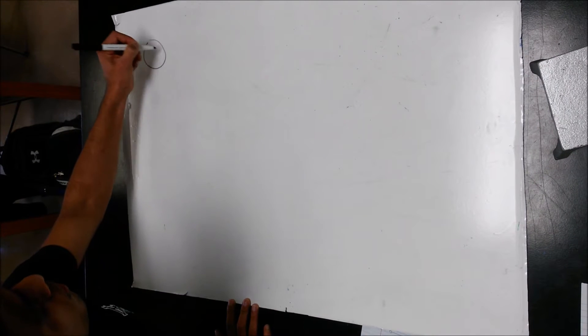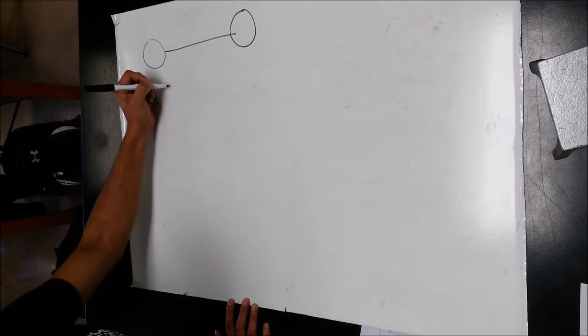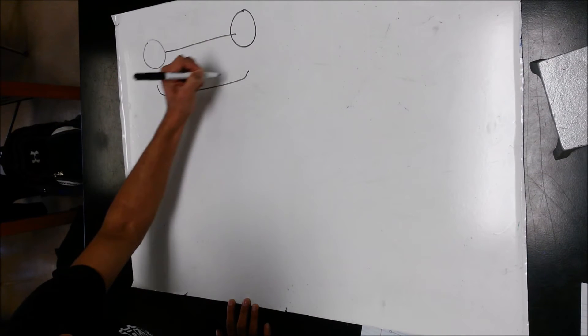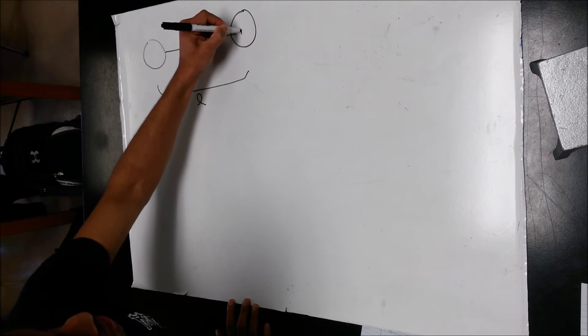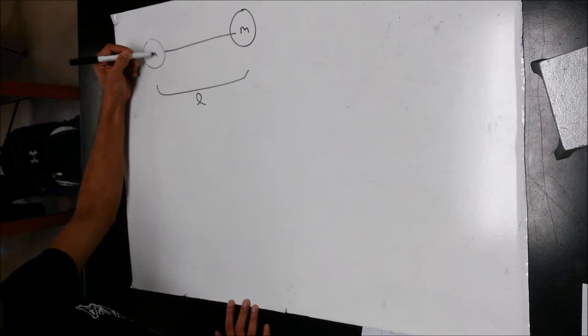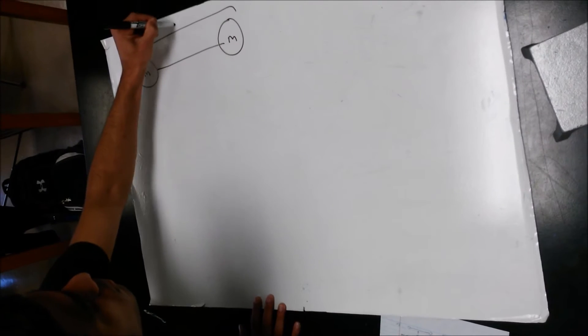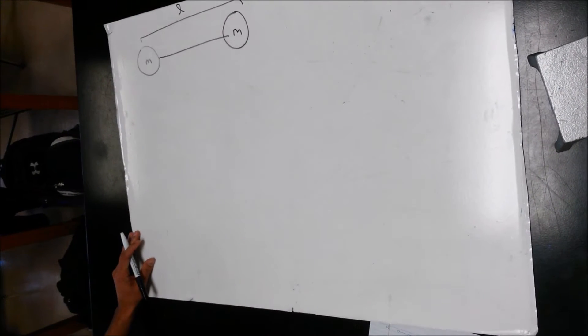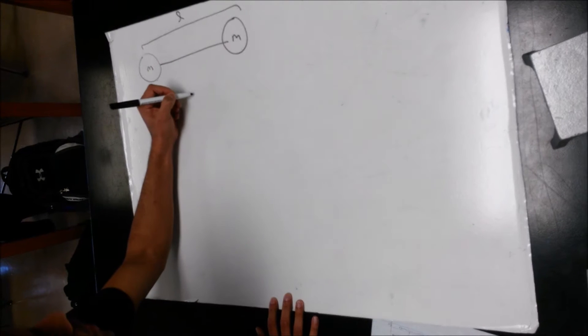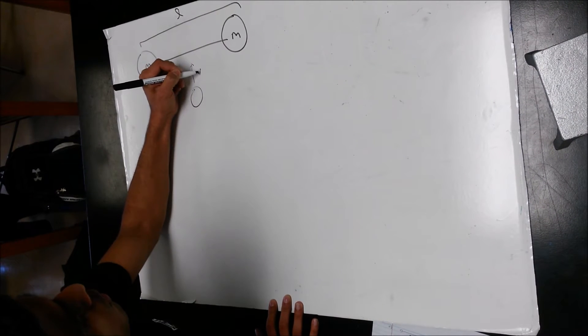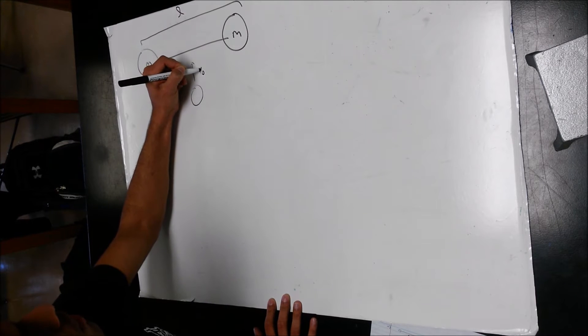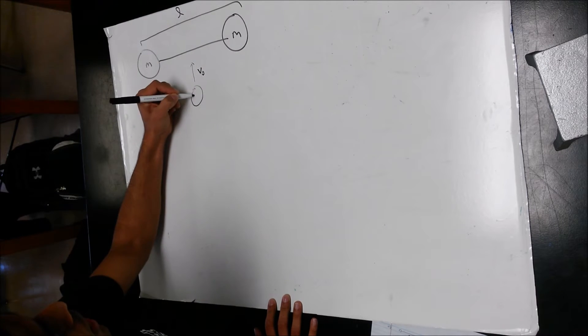This is from the AP Physics C exam 1998 M2. The problem involves a bar with two masses. The bar has negligible mass and is of length L. Each mass is the same with mass M. There's another object traveling with initial velocity V0 and mass M.